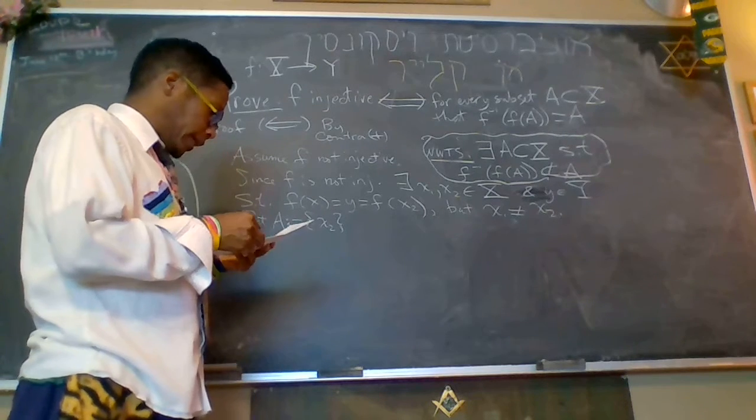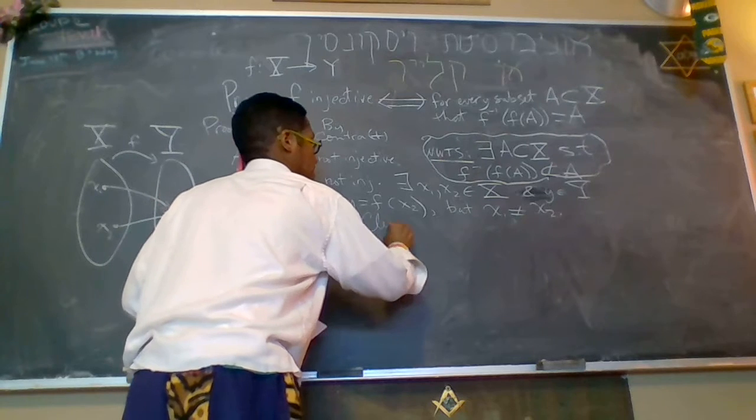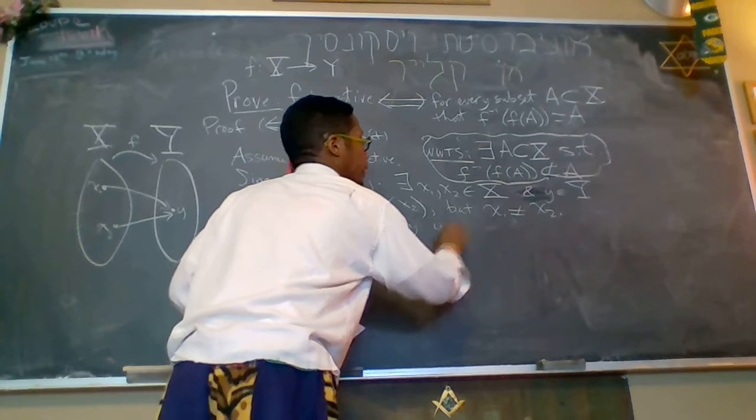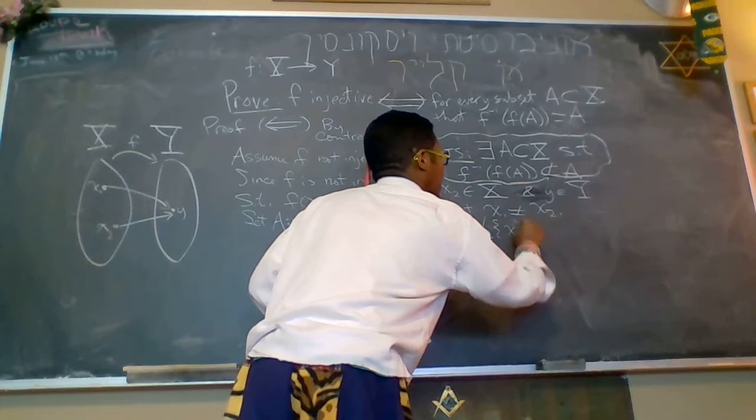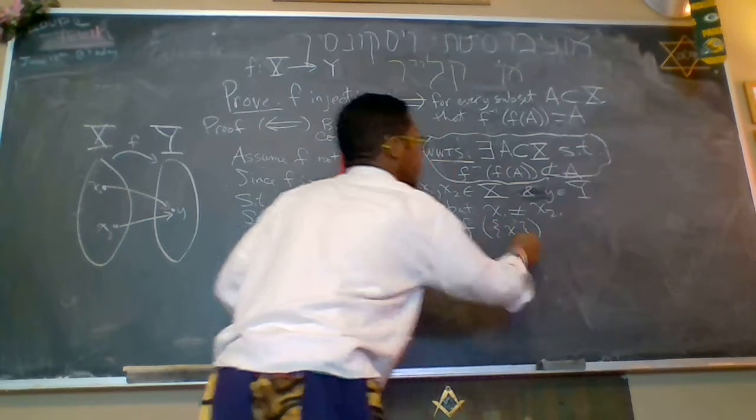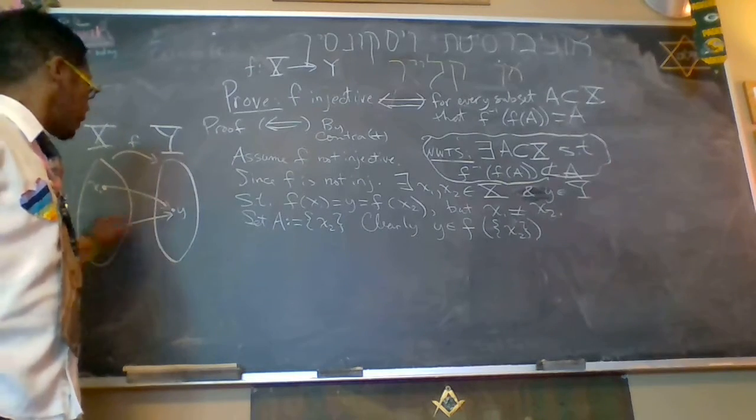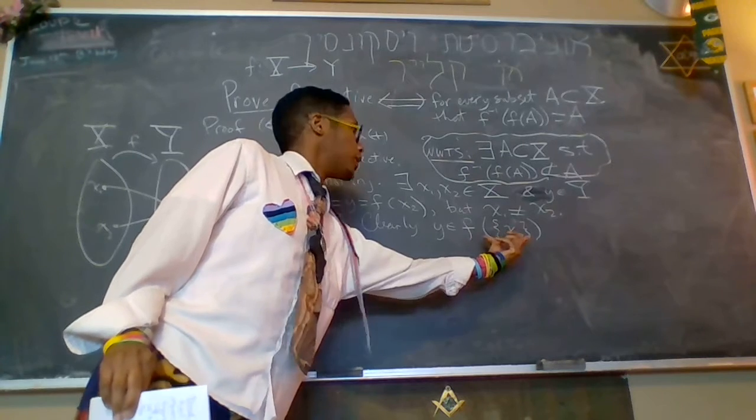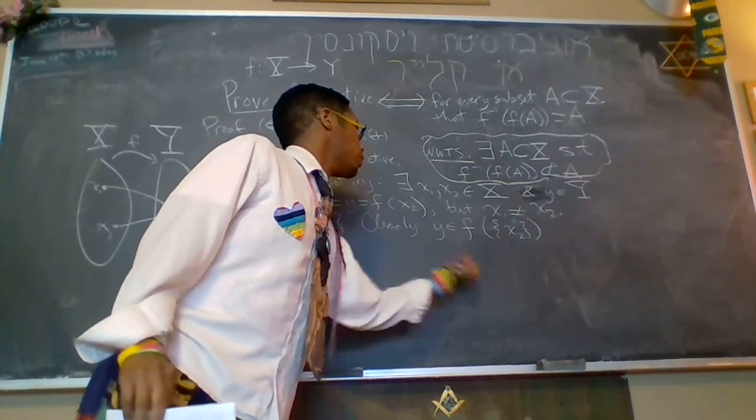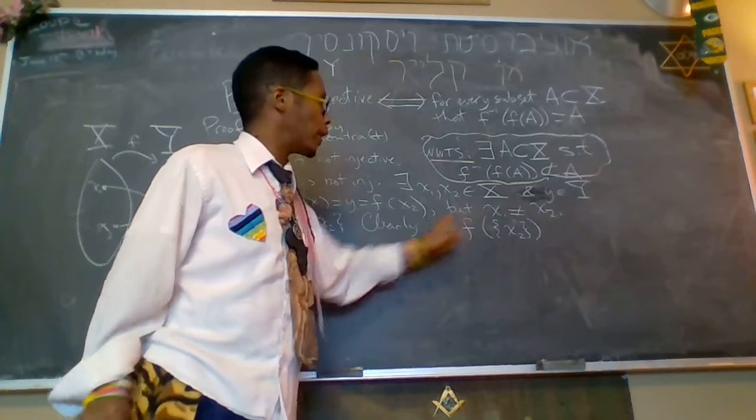So to that end, clearly, y is an element of the image of the set a, which I'm saying is the set containing x2. y is in the image of the image of the set. In fact, y, this is the only thing in the image of the set. Because x2 goes to y. Right? The image of x2 is y, so y is in the set.